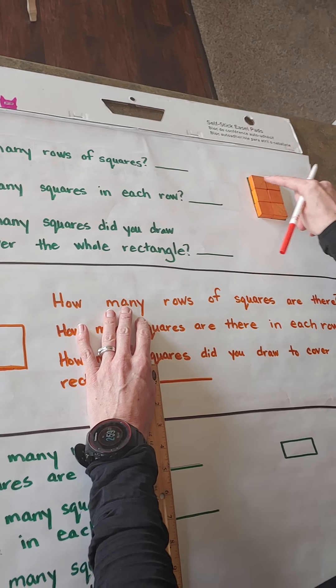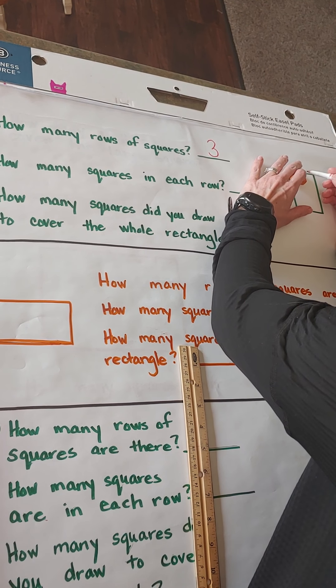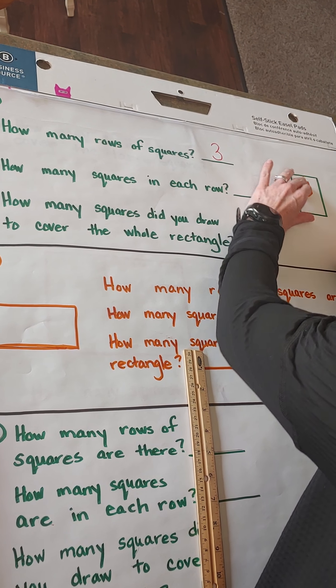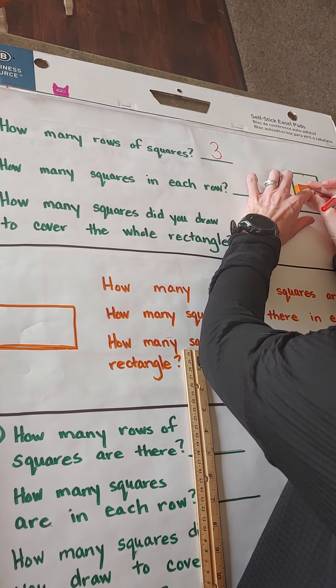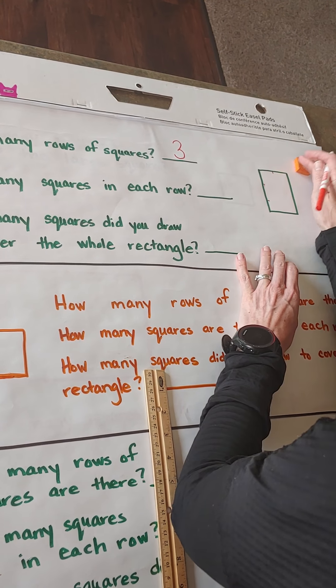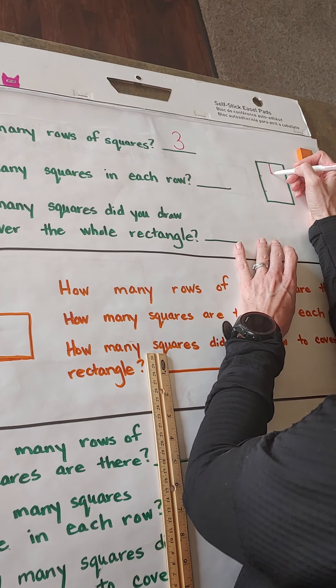Let's partition that. I'm going to use my square here; you use your ruler. I'm going to make a mark here and make a mark here. It does not have to be exact, but we're going to partition that down the middle and then going across. Looks to me like we have about one, two, three — three rows of squares.